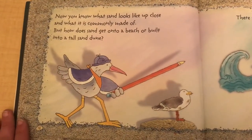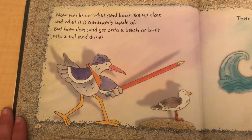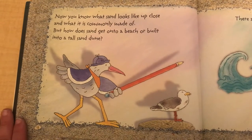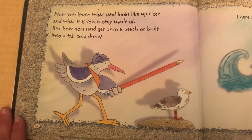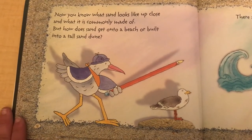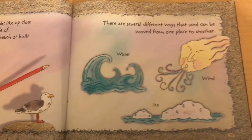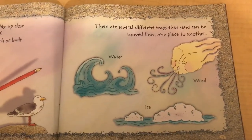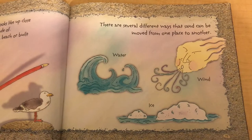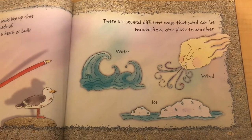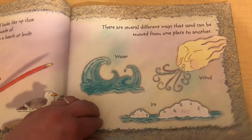Now you know what sand looks like up close and what it is commonly made of. But how does sand get onto a beach or built into a tall sand dune? There are several different ways that sand can be moved from one place to another: water, wind, ice.